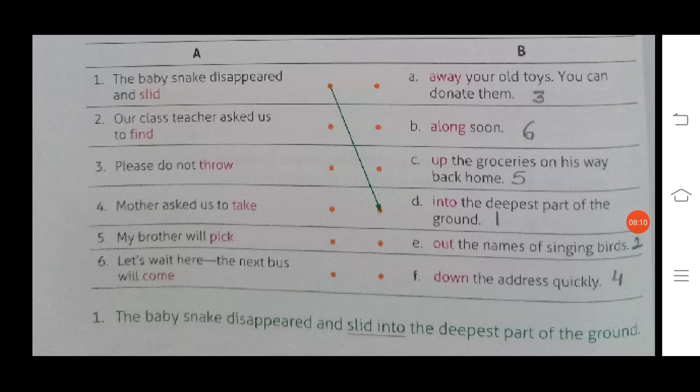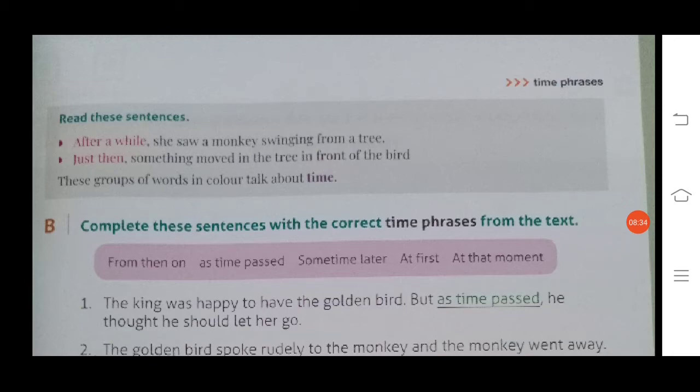Number four: mother asked us to take down the address quickly. Children, this exercise you have to do just in the book with the matching, don't write the full sentence. Number five: my brother will pick up the groceries on his way back home. Number six: let's wait here, the next bus will come along soon. Come along will come together.